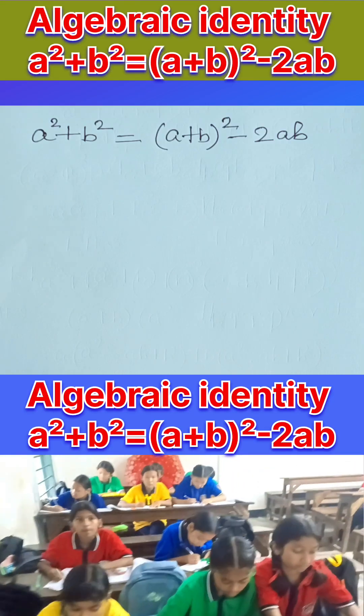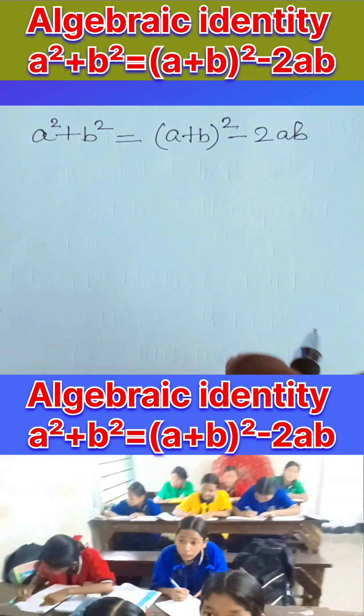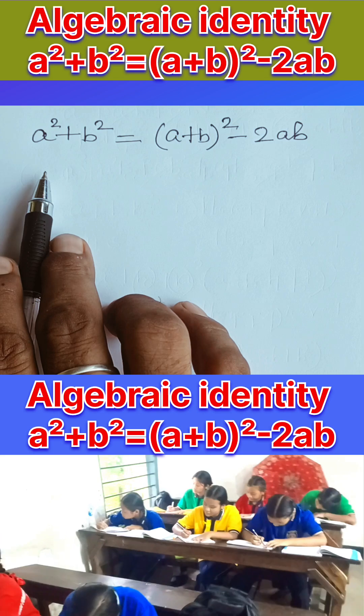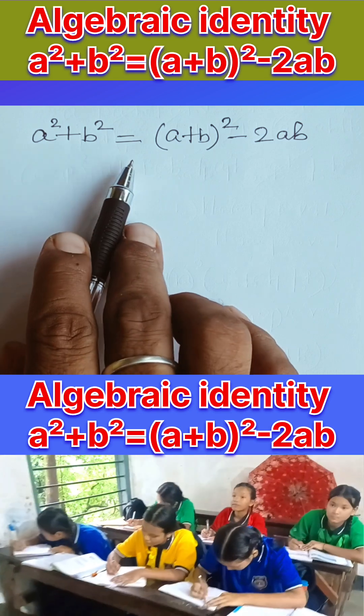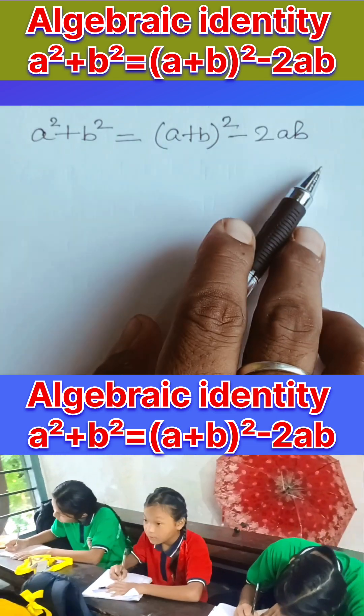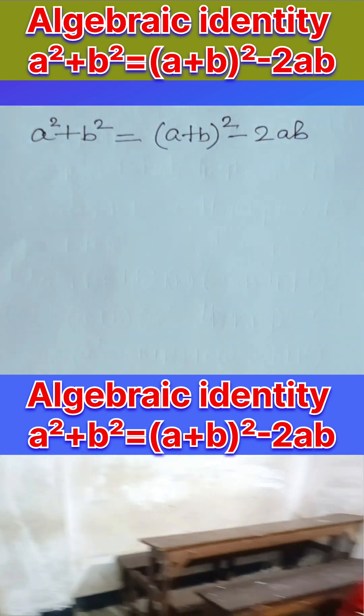Hello everyone, welcome to my channel. Today I am going to derive this algebraic identity: a² + b² = (a+b)² - 2ab. These are the algebraic identities basically we ask the students to memorize.